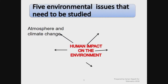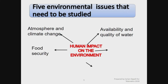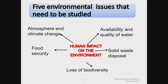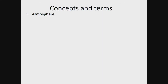First of all, we're going to look at atmosphere and climate change. Then the availability and quality of water, which is quite a big issue in the Western Cape at the moment — but the whole country has water issues. Then food security, which is a huge issue. A large proportion of people, not just in South Africa but in the world, do not experience food security. Then solid waste disposal — we produce so much waste. And then our loss of biodiversity.